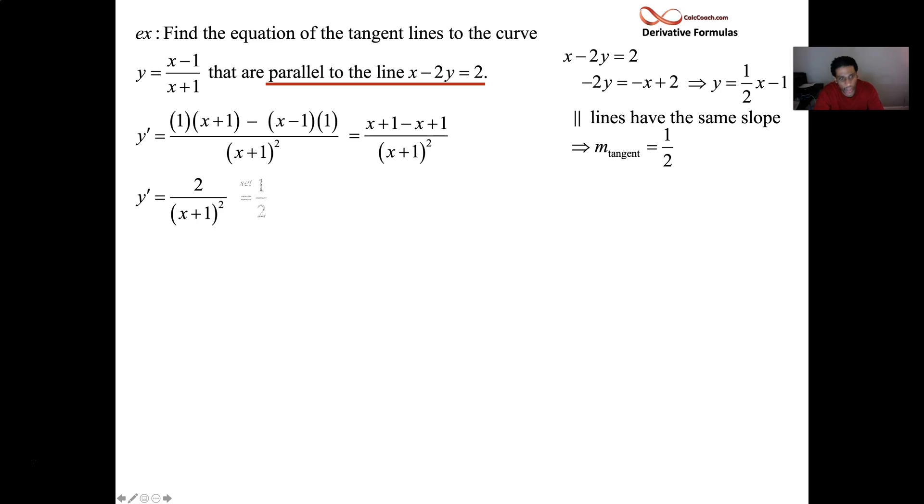This derivative is 2/(x + 1)² = 1/2. For what x values? We have to find that. How are we going to solve this? It's a fraction equal to a fraction. Cross multiply. So 4 should be equal to (x + 1)². Don't multiply that out and try to set it up to be something that you can factor. It's already set up for you. Just take a square root.